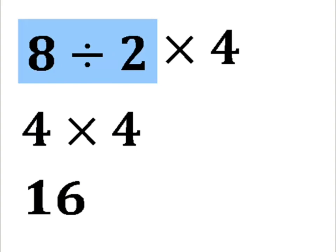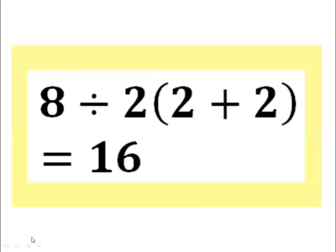And so we get the correct answer, which is 16. Therefore, the correct answer of the expression 8 divided by 2 brackets 2 plus 2 is equal to 16.